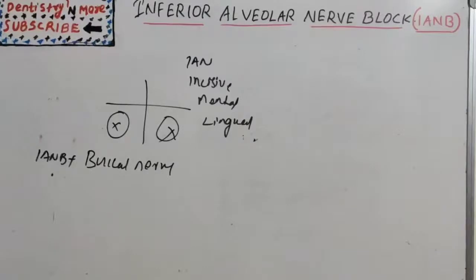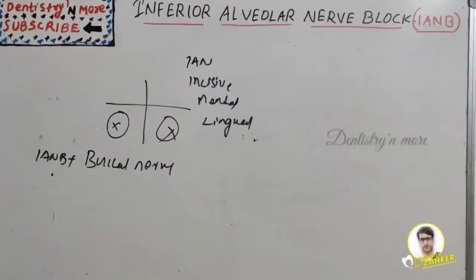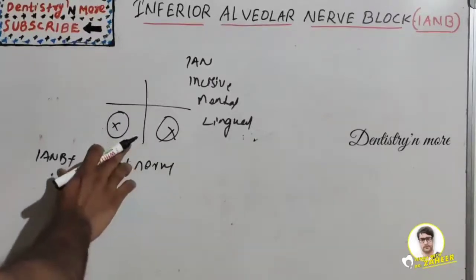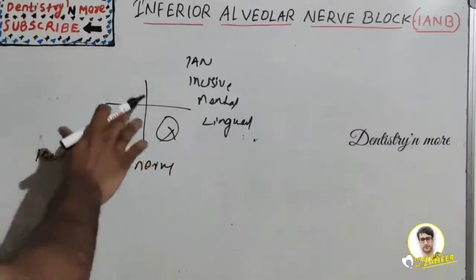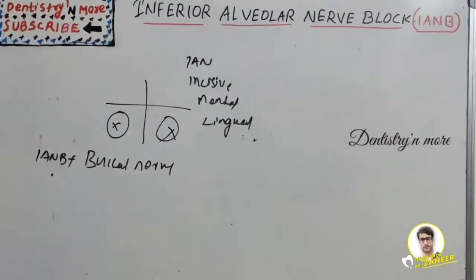Welcome back to another session in dentistry and more. Today's topic in oral surgery is Inferior Alveolar Nerve Block, or IANB. It is a quadrant dentistry nerve block, meaning it can be used for the third or fourth quadrant — the entire quadrant procedures can be done with the help of this single nerve block.